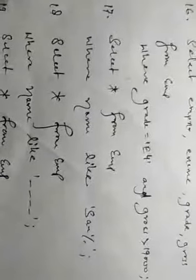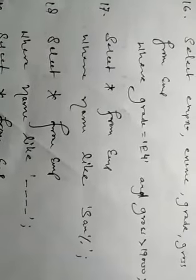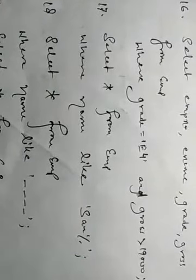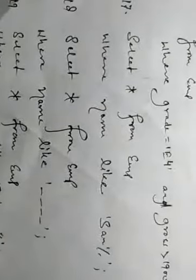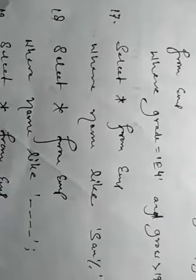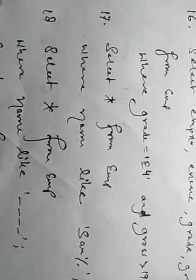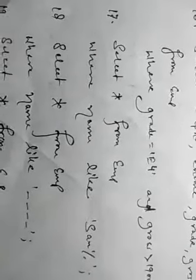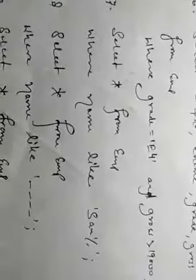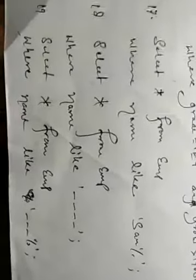In query 17: SELECT * FROM employee WHERE ename LIKE 'SAN%'. This displays all rows of employees whose name starts with SAN. The underscore wildcard represents a single character. In query 18: SELECT * FROM employee WHERE ename LIKE '______' — six underscores represent a name of exactly six characters.